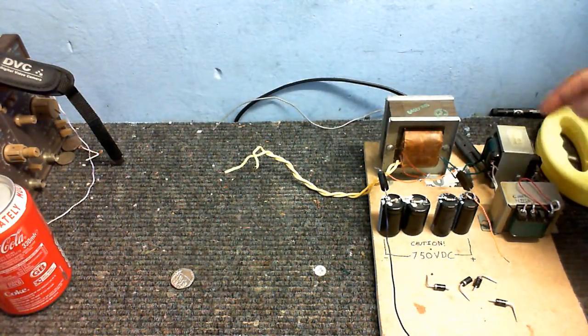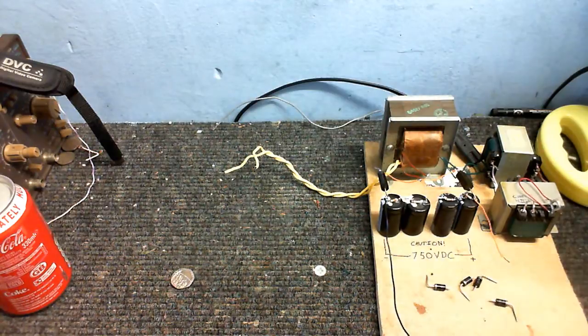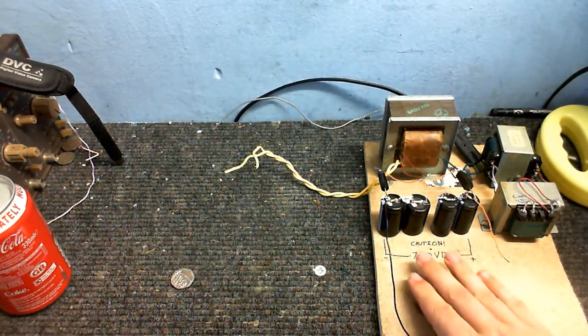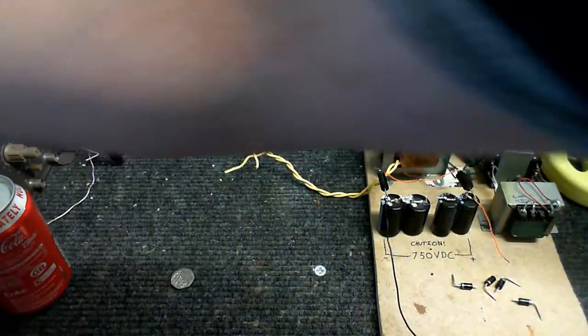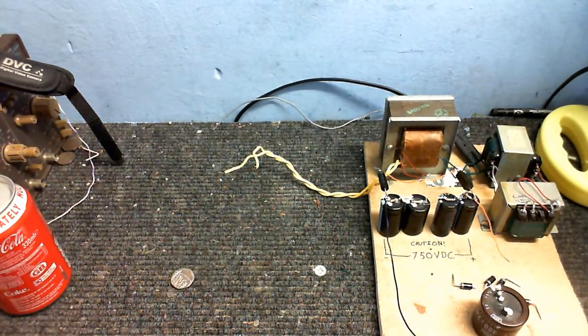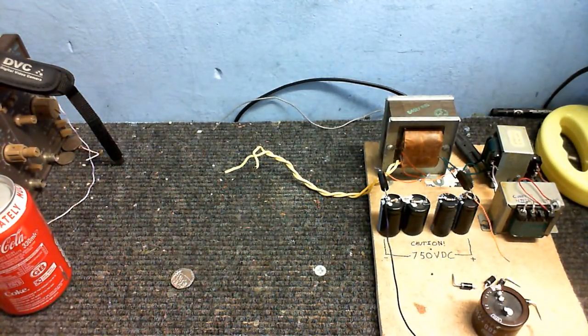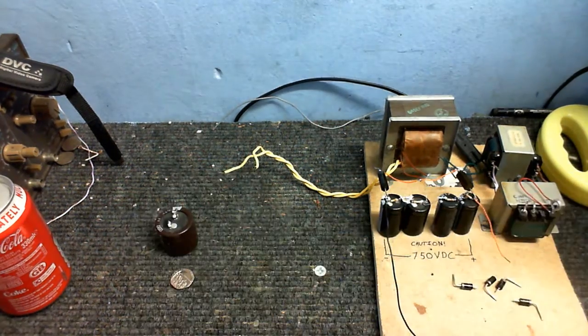Then 12 volts goes into this one and gets turned back into mains voltage. Then it's going to be rectified with these diodes and this capacitor. And that 350 volts is going to be for another part of the circuit, which I will get into much later.